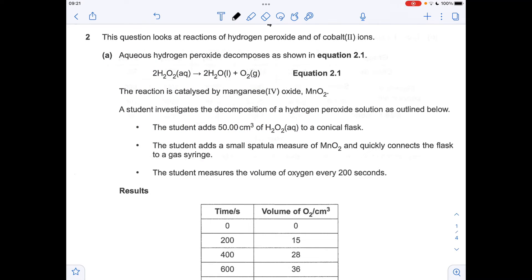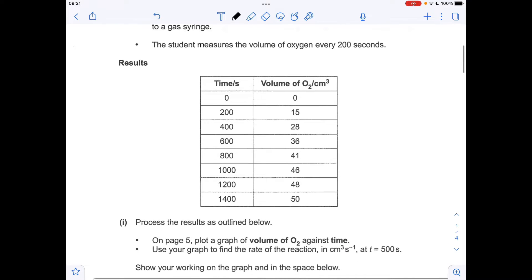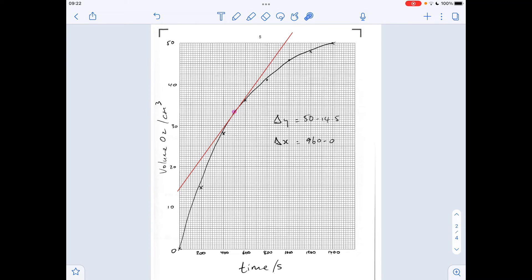Okay, so the first part of the question, rates of reaction. We've got to plot these results on the graph paper on the other side. So we've got to plot volume of oxygen against time and calculate the rate at 500 seconds. So starting with the graph,